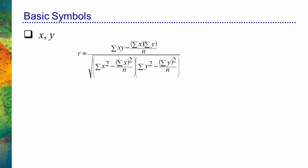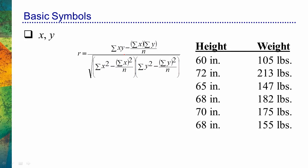So what do x and y actually represent? Well, imagine that we have two variables, like height and weight, and we want to see if there was a correlation between these two variables. Instead of having the words 'height' and 'weight' in our equation, we're just going to simply substitute the letters x and y — it makes it a little bit easier to write. So what we're trying to do is see if there's a relationship between a person's height and a person's weight, and those two variables are represented by x and y.